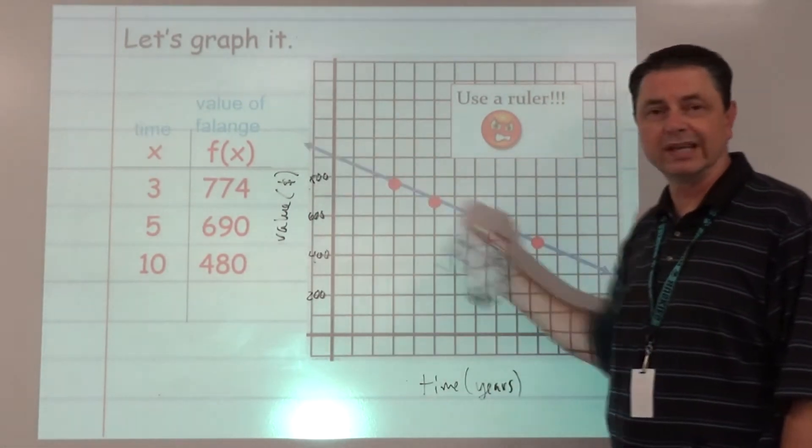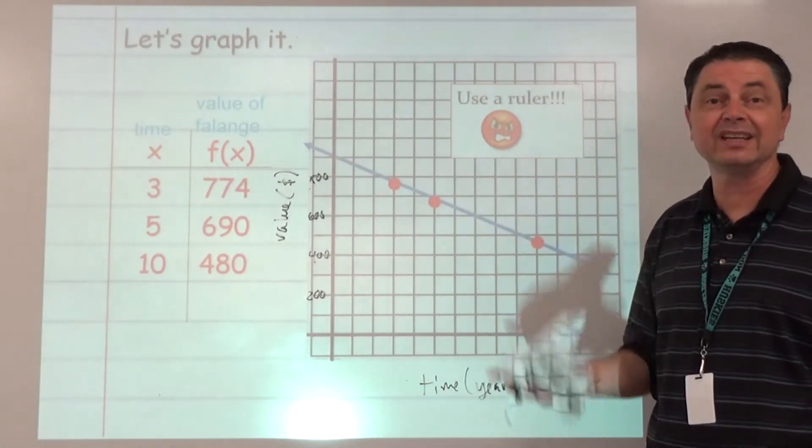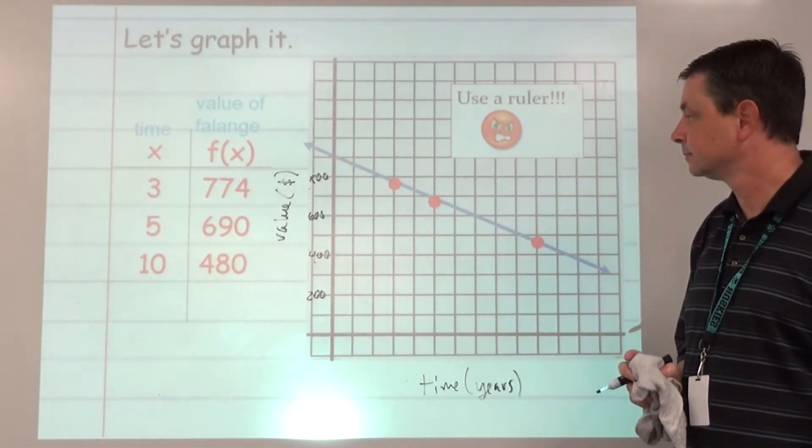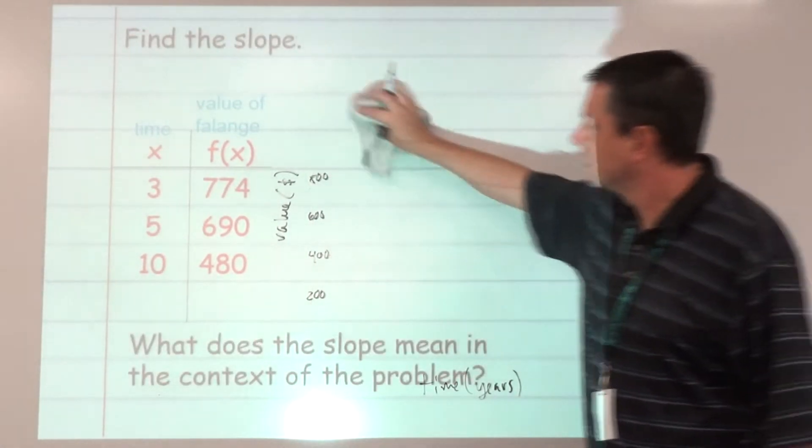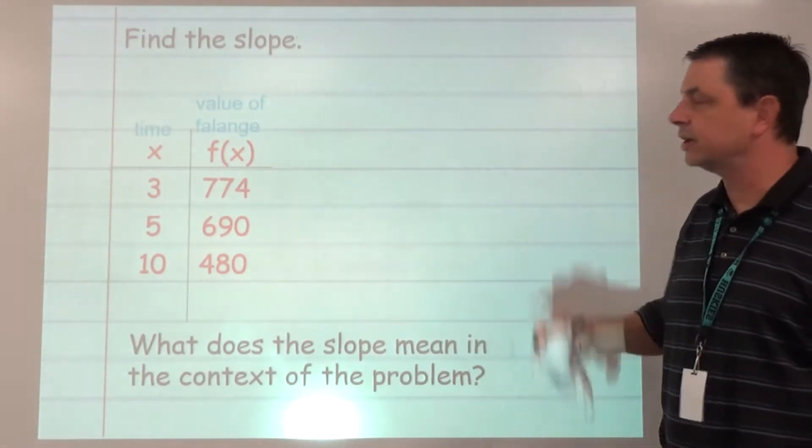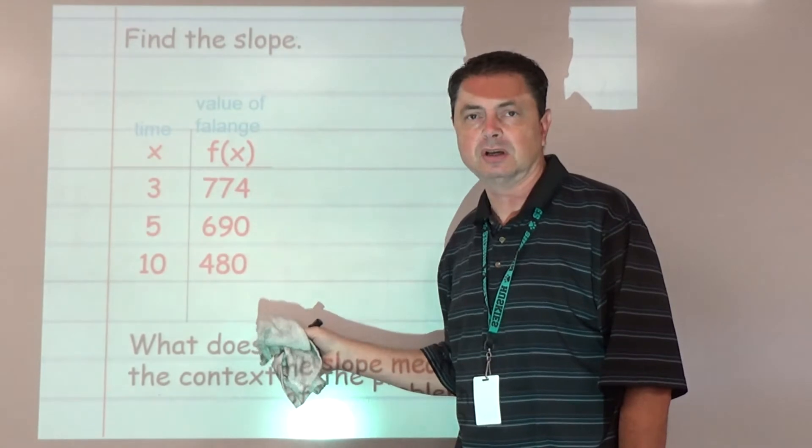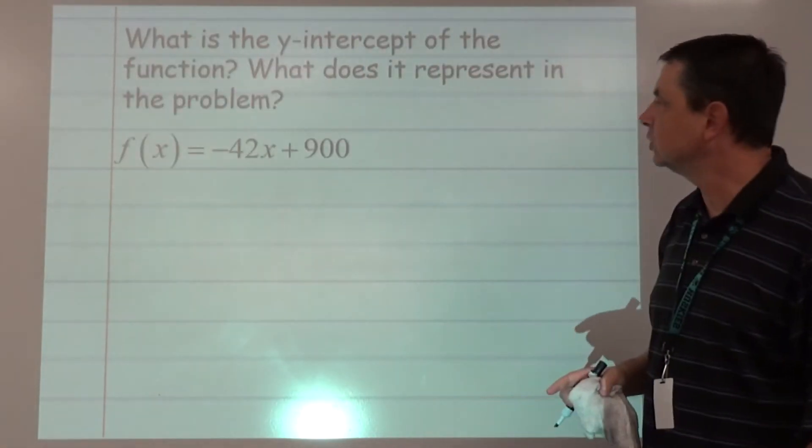As it is a linear function, put arrows at the ends, pass through your points, use a ruler, be exact. Find the slope. Well, actually we've already done the slope. Remember when we found rate of change that being constant, that was the slope.